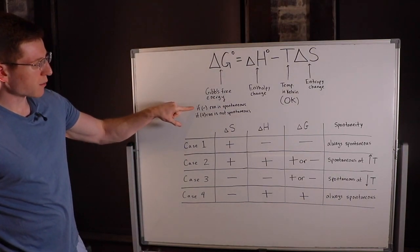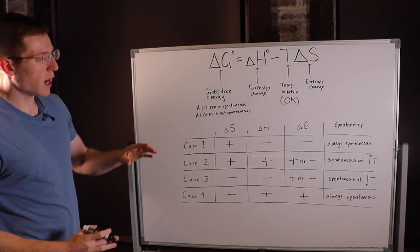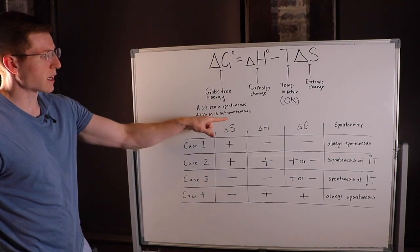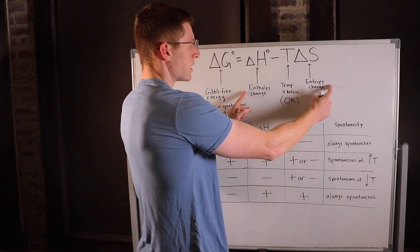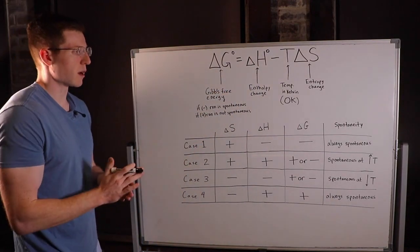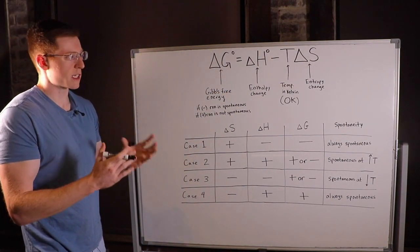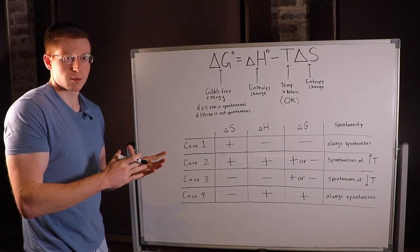If Gibbs free energy is negative, the reaction is spontaneous. However, if Gibbs free energy is positive, the reaction is not spontaneous. Gibbs free energy is determined by delta H, the enthalpy change—the amount of heat that is either absorbed or released by the reaction, which allows us to say whether the reaction is exothermic or endothermic.